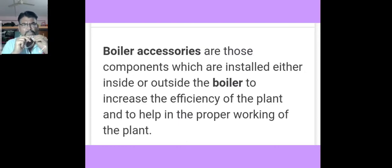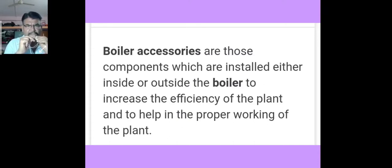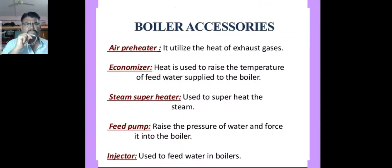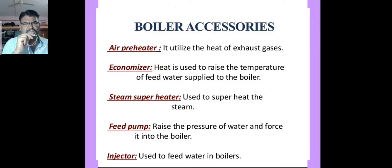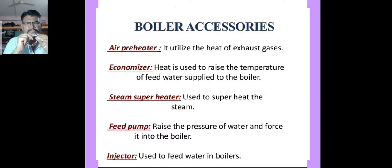Boiler accessories are components installed either inside or outside the boiler to increase the efficiency of the plant and help in proper working. Though these are not compulsory parts, they are used to increase boiler efficiency. The air preheater utilizes the heat of exhaust gases; the economizer uses heat to raise the temperature of feed water supplied to the boiler; the steam superheater is used to superheat the steam; the feed pump raises the pressure of water and forces it into the boiler; and the injector is used to feed water into the boiler.